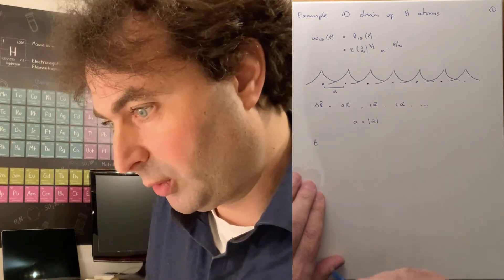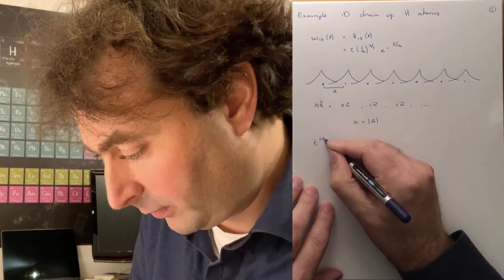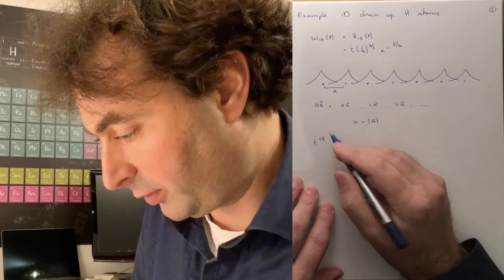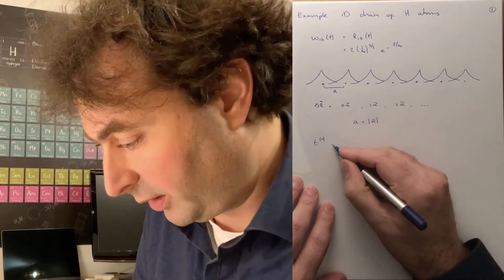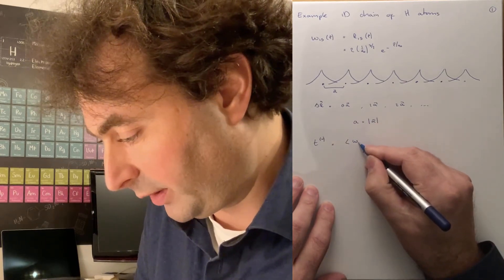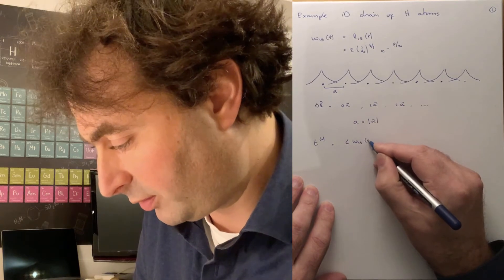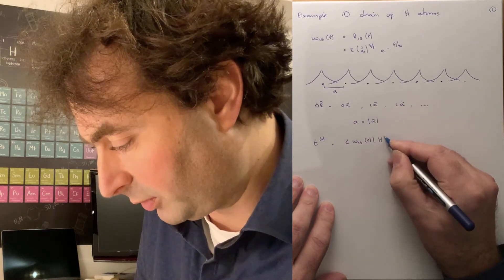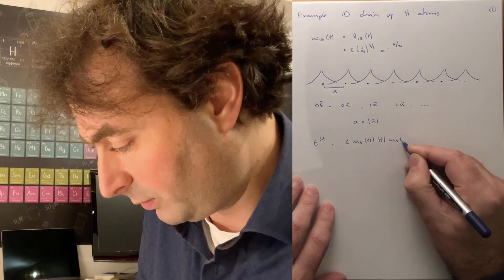We can have a look at our hopping. And the on-site hopping for delta r is 0 times a is given by the 1s wave function times the Hamiltonian times the 1s wave function.